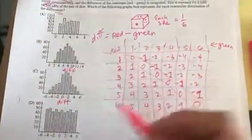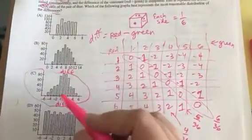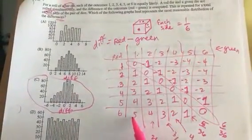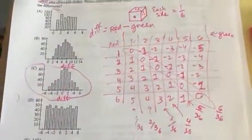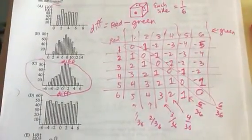And these probabilities would be the same over here. And so that definitely looks like C. The most likely outcome would be zero. And the least likely outcomes would be these numbers. Five and negative five. Five and negative five. So definitely that's our answer. Thanks for joining us.